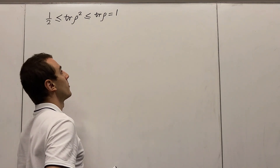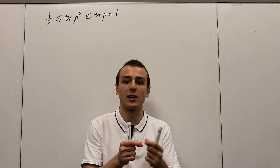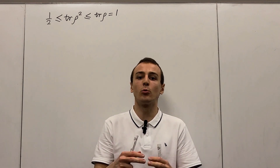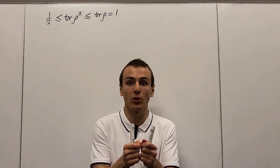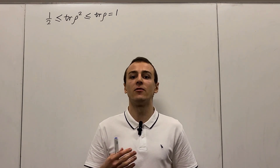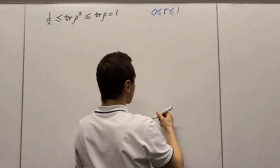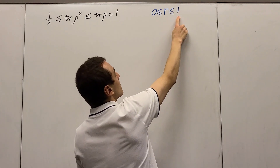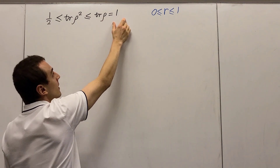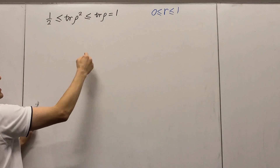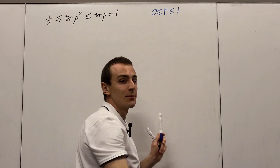Another important relationship links the value of r — the length of the Bloch vector, which is a scalar. We can also think of it as one of three coordinates needed to specify a point in spherical coordinates: r is the distance from the center, and we have two angles theta and phi. r is sandwiched between 0 and 1. When r equals 1, we have a pure state — trace of rho squared equals trace of rho equals 1. When purity equals one half, that corresponds to r equals 0, the maximally mixed state.